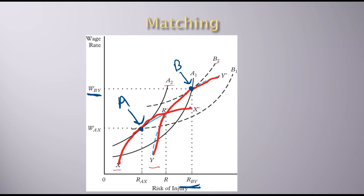Now worker B is at B2 and A is at A2. The higher you get on these indifference curves, the higher the utility level. For example, here we have A2 and A1. In both cases, worker A is having R_AX amount of injury risk, but they're receiving a higher wage along A2, so they would rather be at A2. In these cases, both workers are better off. Worker B is at a higher indifference curve and worker A is at a higher indifference curve. This is how matching happens.